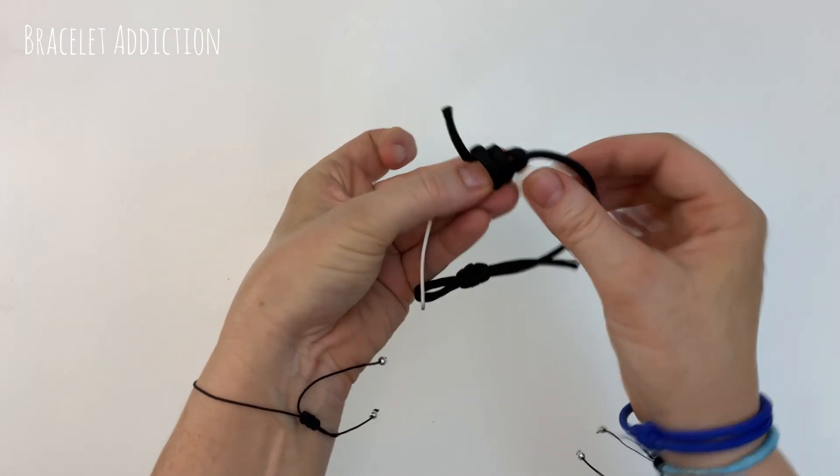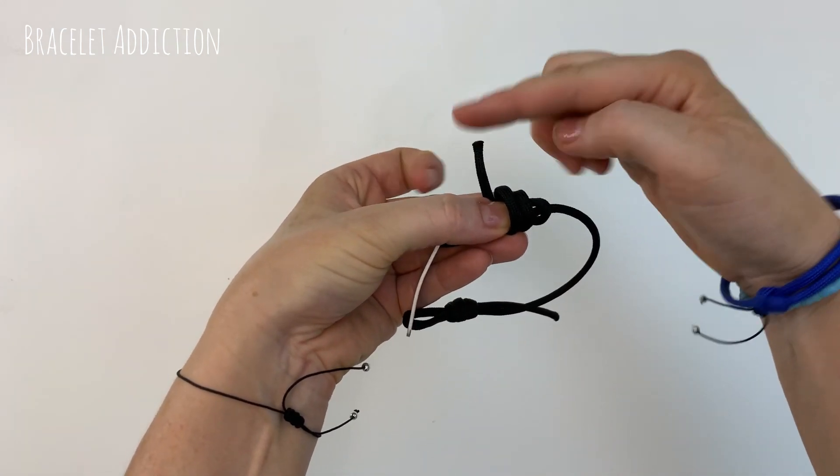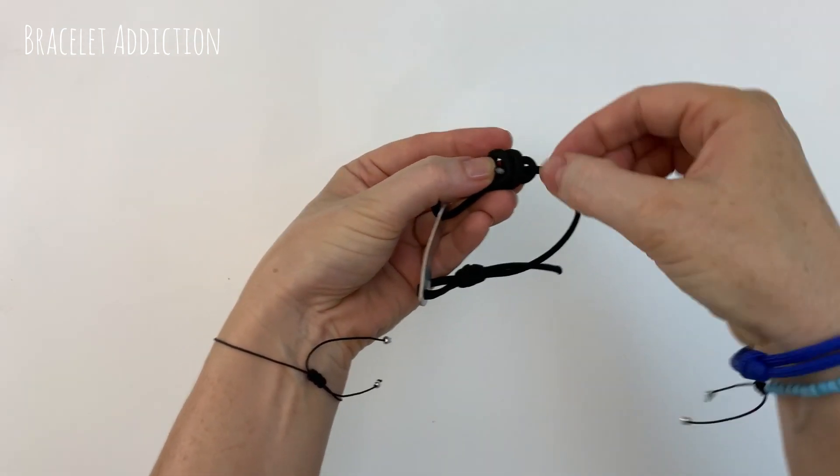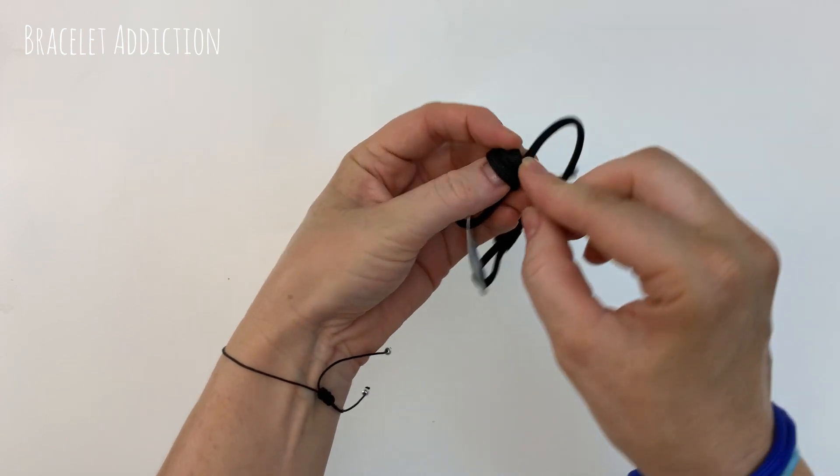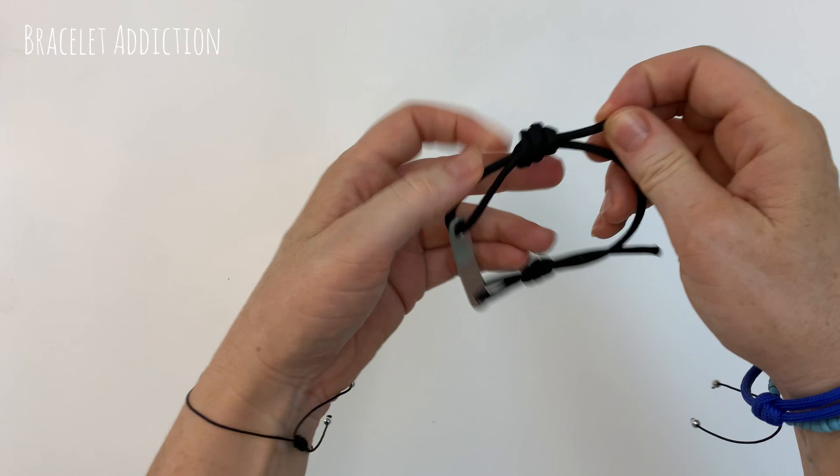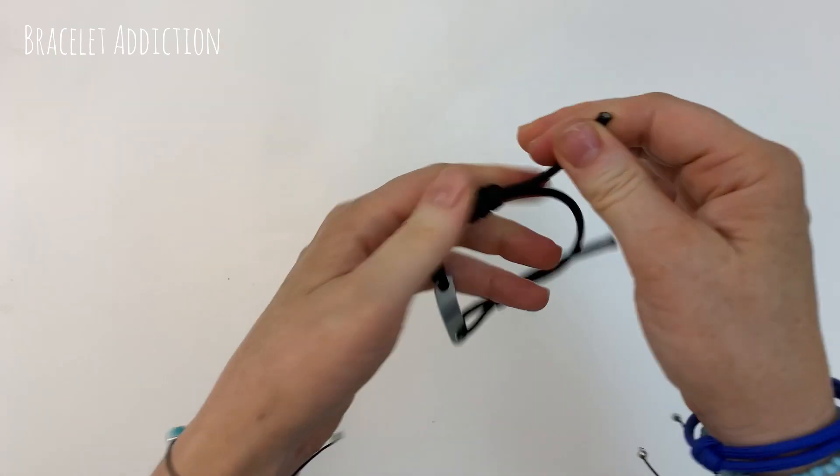So we've got our three loops and our tail end which we just bring around and place down all three loops. Pulling it out the right hand side and gently pulling that knot down nice and tight and tidy.